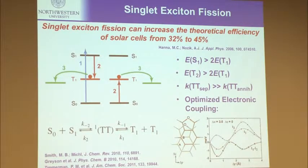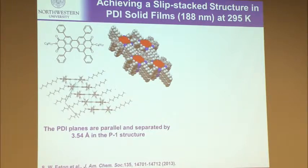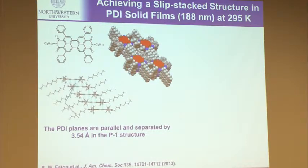For singlet fission, you need the singlet energy to be greater than twice the triplet exciton energy, and you need optimized electronic coupling. Theory suggests that slip-stacked molecules — rather than face-to-face — minimizes the electron repulsion integrals necessary to promote singlet fission. It turns out our perylene diimide red car paint molecule actually does this. By putting four phenyl groups on the periphery, we force the system from its preferred face-to-face orientation to a slip-stacked orientation. In the single crystal structure, we get essentially infinite columns of slip-stacked dye molecules at 3.5 Ångstroms layer-to-layer — perfect.